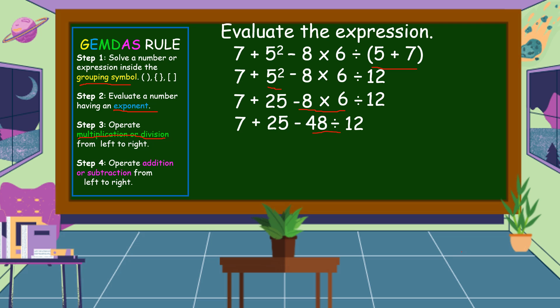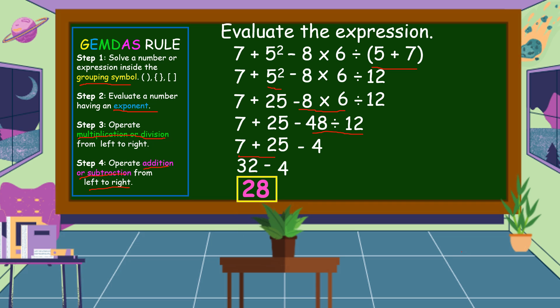Next, we're going to divide. Bring down first: 7 plus 25 minus 48 divided by 12 is equal to 4. Next step is we're going to operate addition or subtraction from left to right. Here, addition comes first before subtraction. So let's add — 7 plus 25 is equal to 32, then copy minus 4. Lastly, let's subtract — 32 minus 4 is equal to 28.